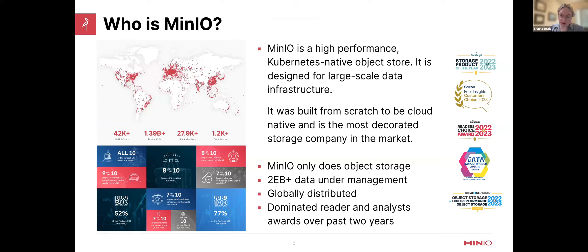We're a drop-in replacement for AWS S3, but we can run anywhere — on AWS, GCP, Azure, but also on-prem, on colos, on edge. We do that because we think about the cloud as an operating model and not as a physical place. The only thing we do is object storage, and because of that we've generated a huge audience of developers. We've got more than two exabytes under data management globally, and we've done 1.3 billion Docker pulls in aggregate — about a million per day, which is remarkable for storage software. We've been highly decorated, and the ones we like most are the Gear Awards, which speaks to the fact that developers love MinIO.